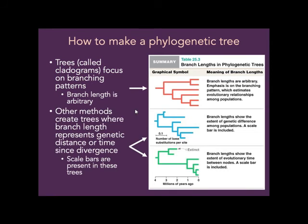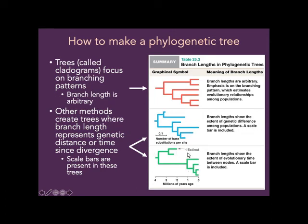There are other methods to create trees where branch length means something — you might see these in published papers. In one kind of tree, the branch length represents the number of base substitutions per site — that is, the number of nucleotide mutations that have happened. Another kind of tree is used when looking at a lineage with both extinct and extant species, showing how long ago each lineage lived. Lines that end at zero time are still alive; those that end earlier went extinct earlier.